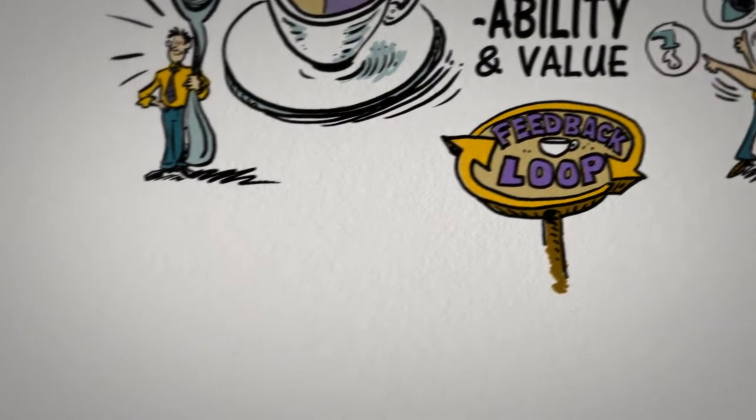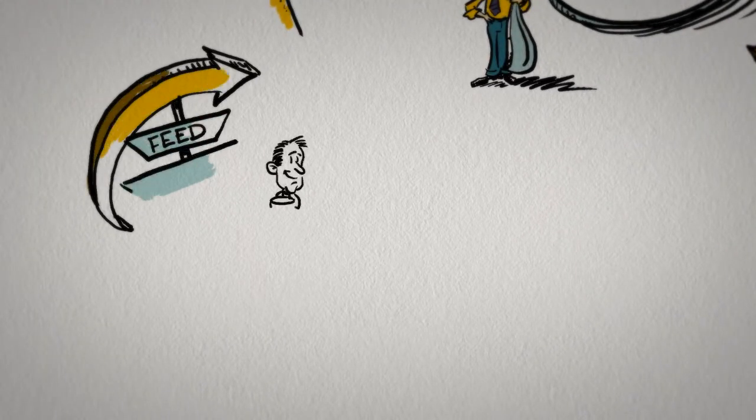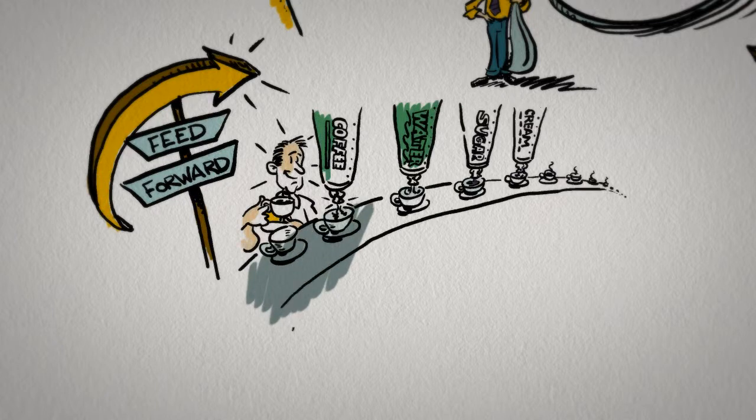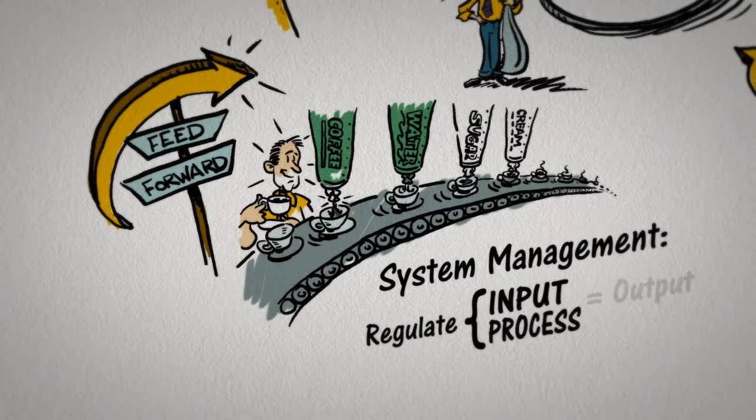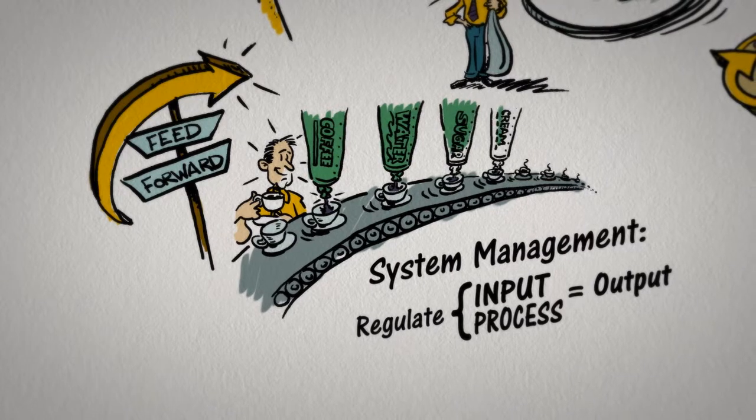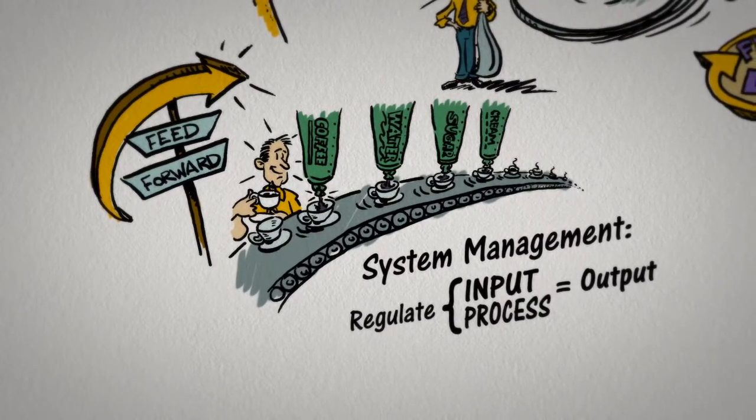There is another kind of control loop called feed-forward, in which you monitor input variations and then adjust the process to compensate. System management involves regulating the input and process for the desired output. If the process changes, then tools, barriers, and regulating may also need to be changed depending upon the desired benefit.